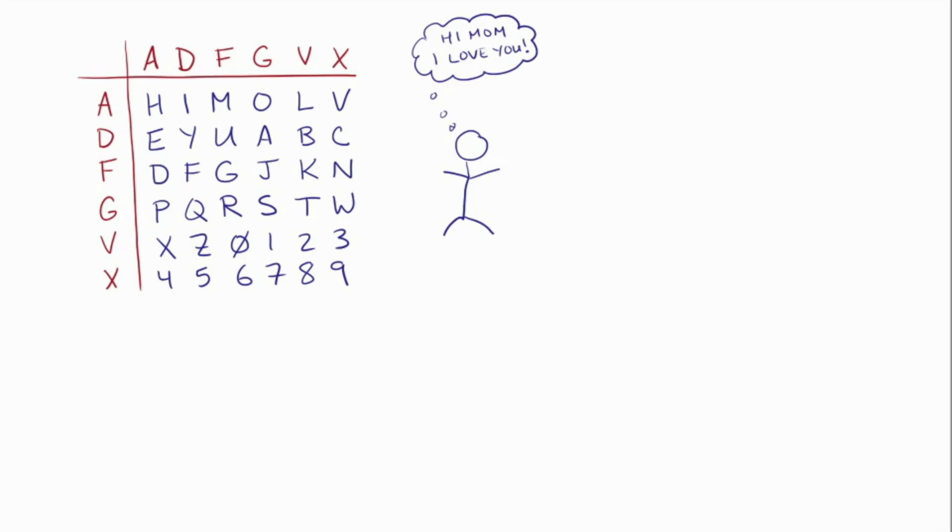So you could send the key as hi mom I love you, and then somebody could do this process, or you could just send the whole table as the key. That's only one part of the key. That's called a Polybius square.